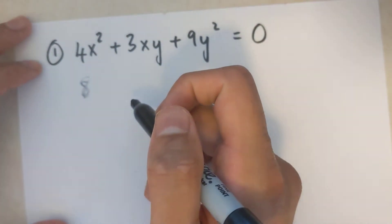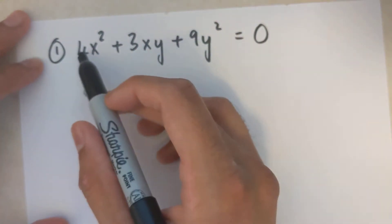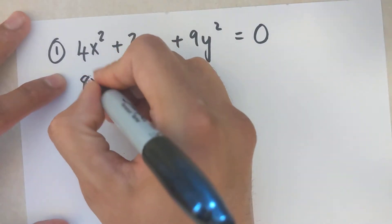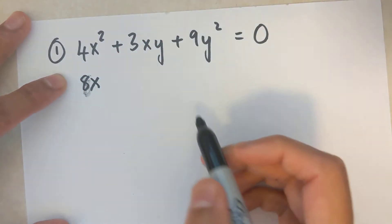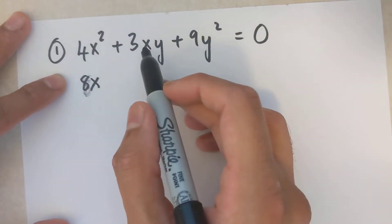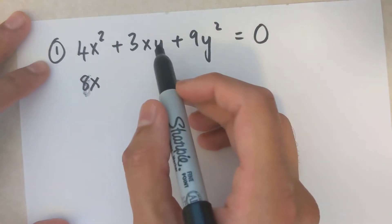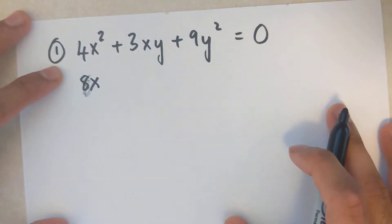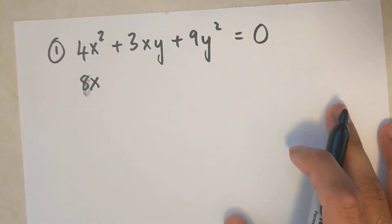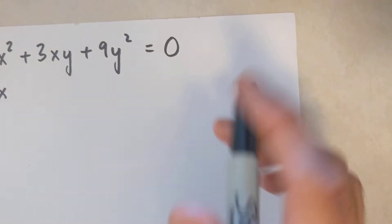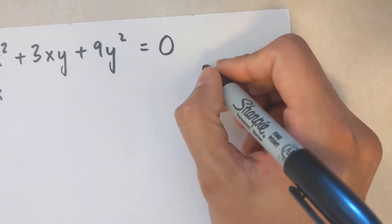When deriving this first question, the derivative of 4x² is 8x. The derivative of 3xy involves two different functions, so I have to use the product rule here. I'm going to do that on the side.